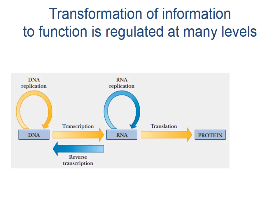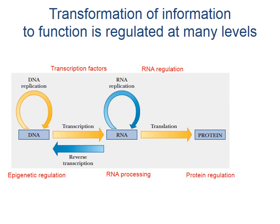The way in which information is transformed from DNA to RNA to protein provides many levels at which regulation can be exerted to modify the overall outcome of the process. For example, you can control how DNA is accessed through epigenetic regulation. You can control the way that DNA is transformed into RNA through different transcription factors. You can also control RNA processing and RNA regulation. And finally, you can control protein activity through different modes of protein regulation. The sum of all of these regulatory mechanisms results in your observable phenotype.